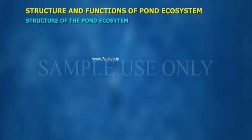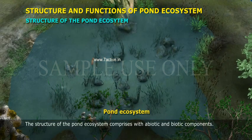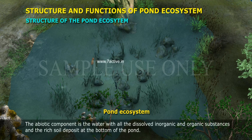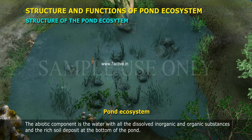Structure of the Pond Ecosystem. The structure of the pond ecosystem comprises abiotic and biotic components. The abiotic component is the water with all the dissolved inorganic and organic substances and the rich soil deposit at the bottom of the pond.